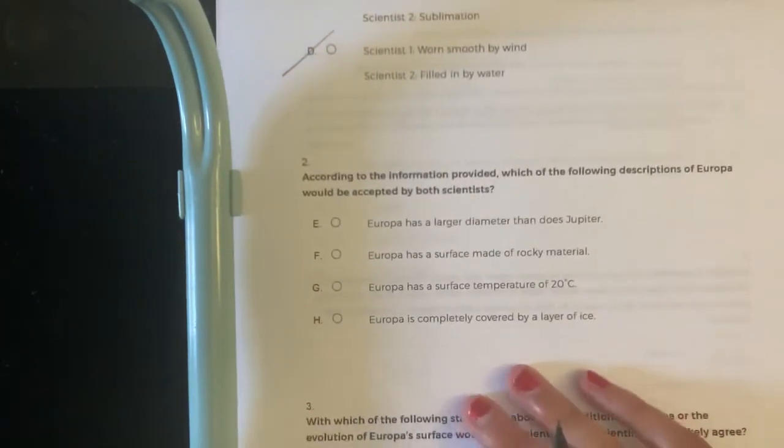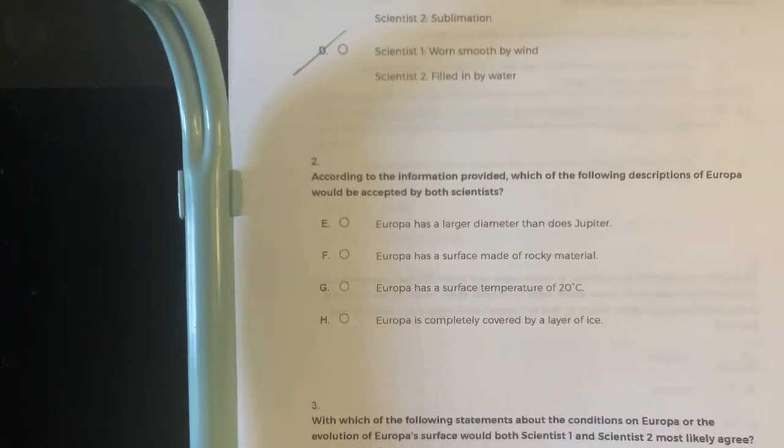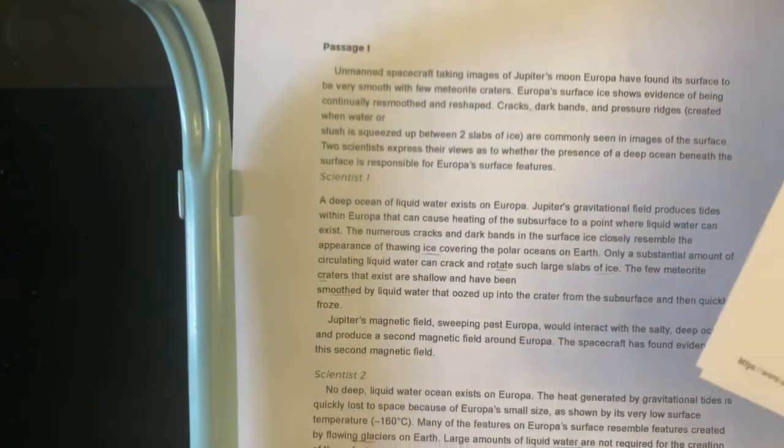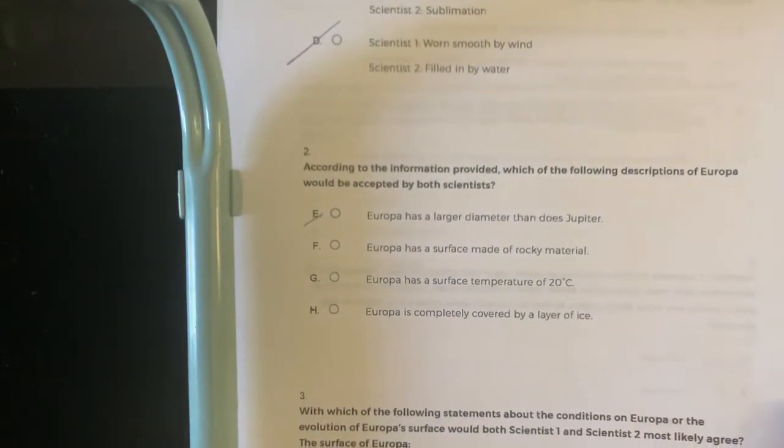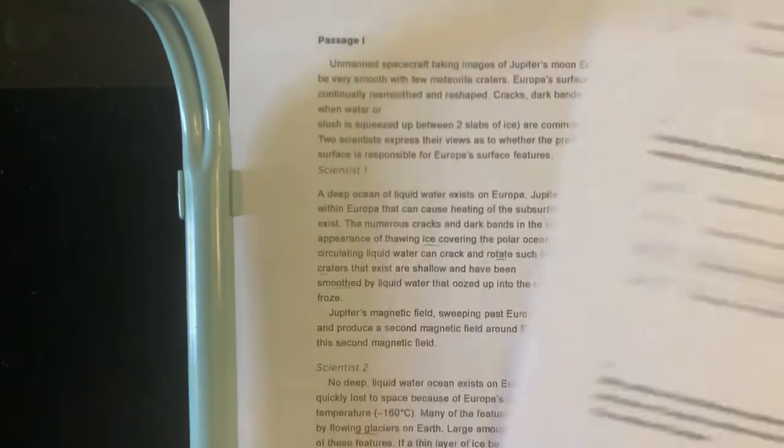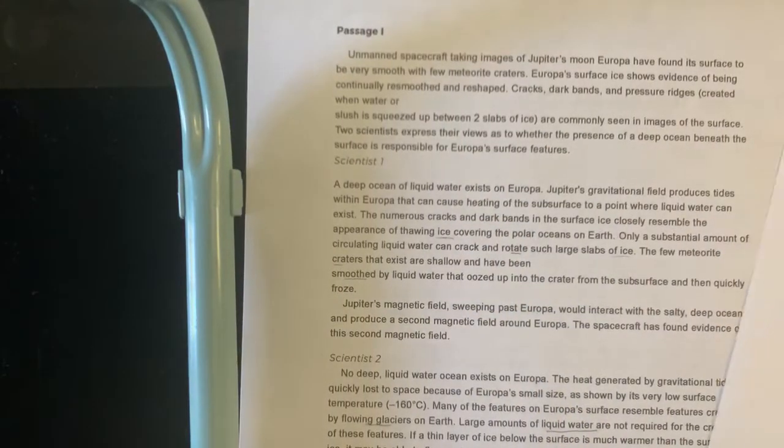Number two. According to the information provided, which of the following descriptions of Europa would be most accepted by both scientists? So they don't talk about the diameter at all, and Jupiter is only mentioned in the first one, so that's no. Europa has a surface made of rocky material? No. They say right here that it's smoothed by liquid water, so the surface is smooth, so no.